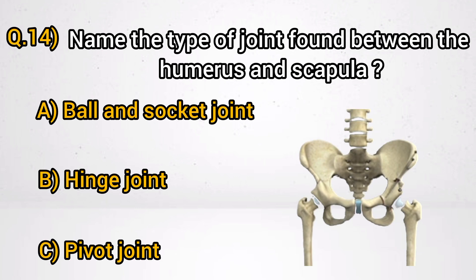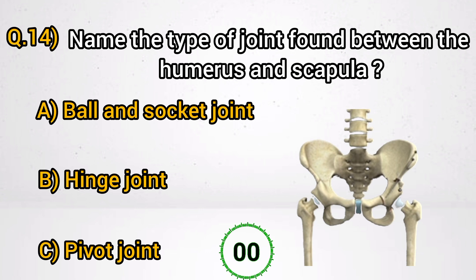Question 14: Name the type of joint found between the humerus and scapula? Answer A: Ball and socket joint.